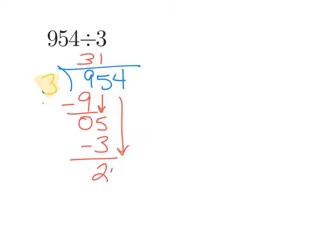Bring down the 4. 3 goes into 24 8 times. 8 times 3 is 24. When we subtract we're left with 0. There's no remainder. That means that 954 divided by 3 is 318.